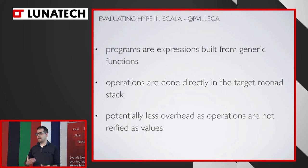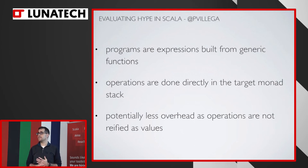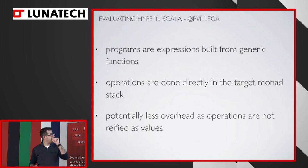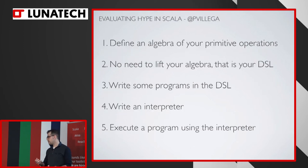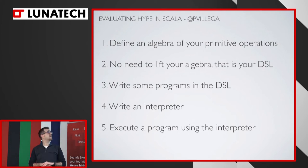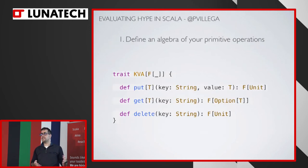Why did Tagless get traction in the community? It has key differences with Free. First, programs are expressions — they are not ADTs. You're defining the functions directly without that middle step of the ADT. In Free, through your interpreter you say which monad you're targeting. In Tagless Final, you decide the monad at the beginning — all this will work in this monad — no more complexity of natural transformations. And it has less overhead because you're not working with heap-allocated values.